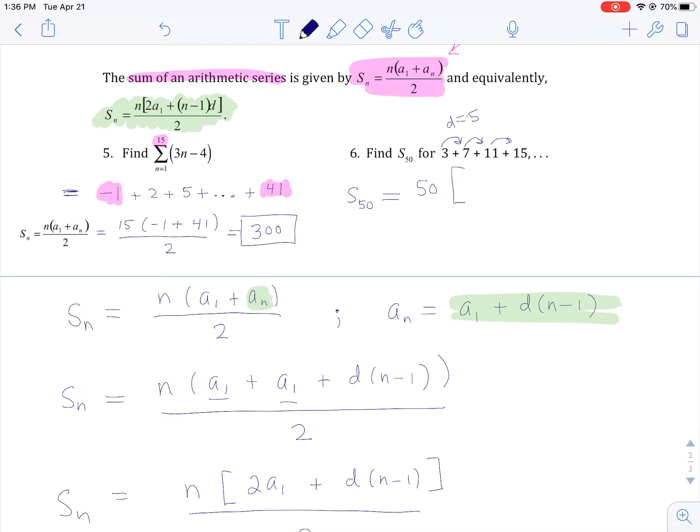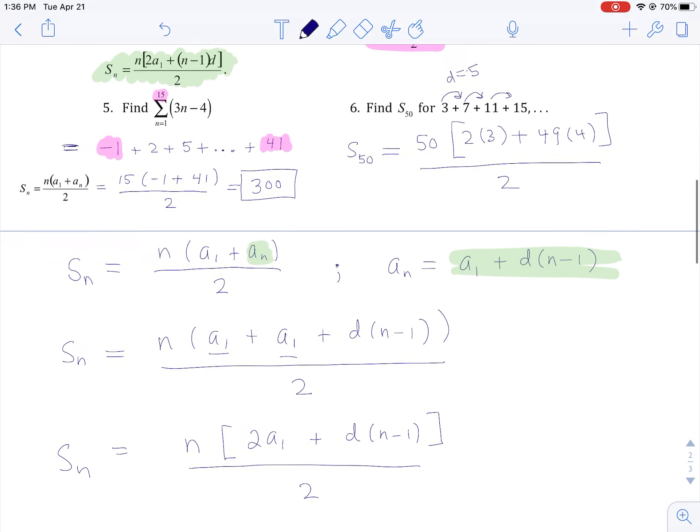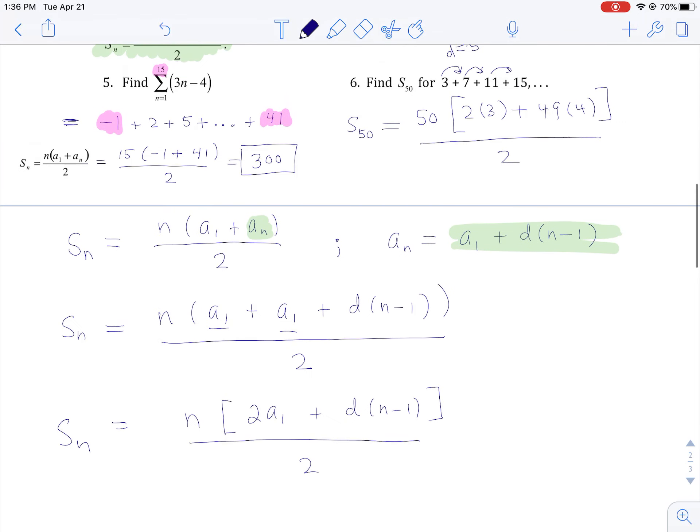So let's plug in. n is 50. I'm doubling the first term, so I'm doubling 3. I'm taking n minus 1, that's 49, multiplying by the common difference, which is 4. And the whole thing gets divided by 2. Of course, you could jam that in your calculator. And guess what? You happen to get 5050, similar to the warm-up problem.